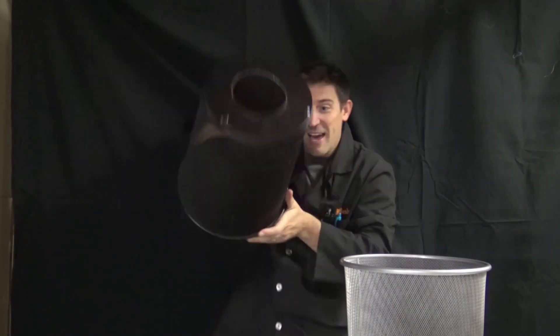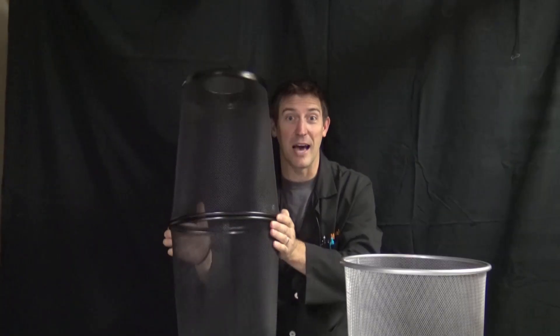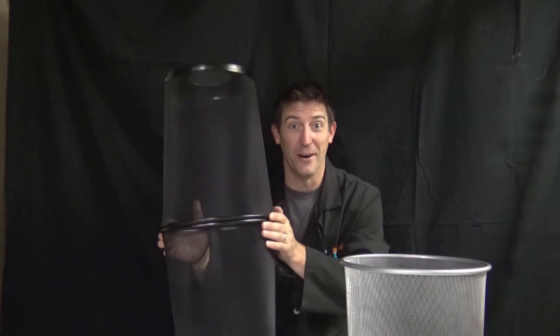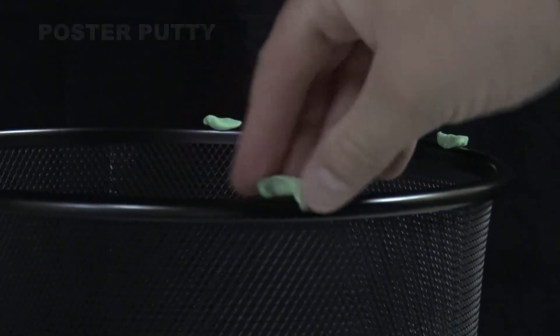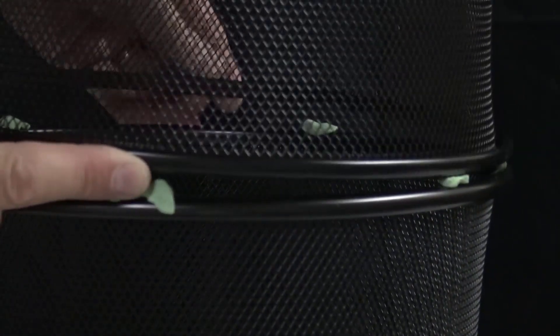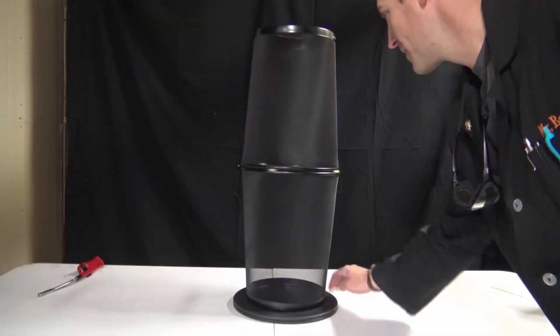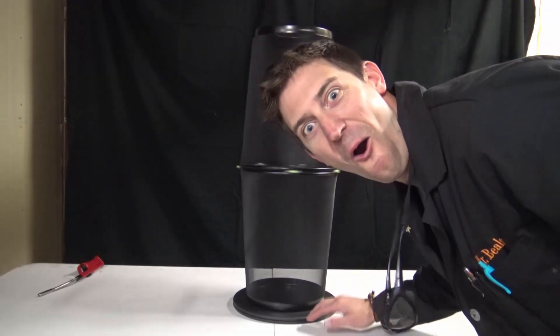We've got a hole in the bottom there and I'm going to see if we can double the size of the fire tornado. A little more poster putty around the edges here to put the two waste baskets together. The poster putty actually works really well and seals up nice and tight, and then you spin.